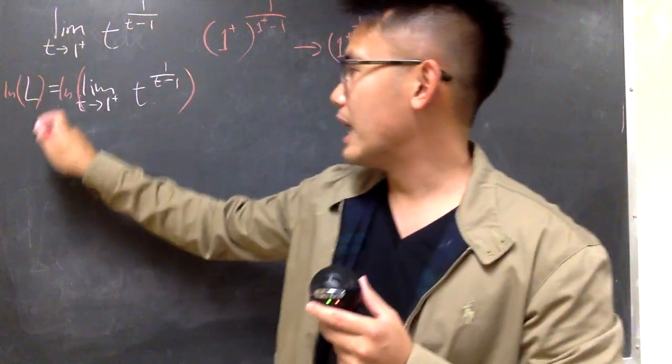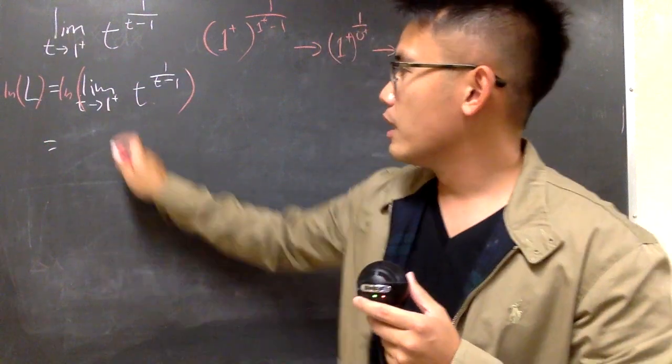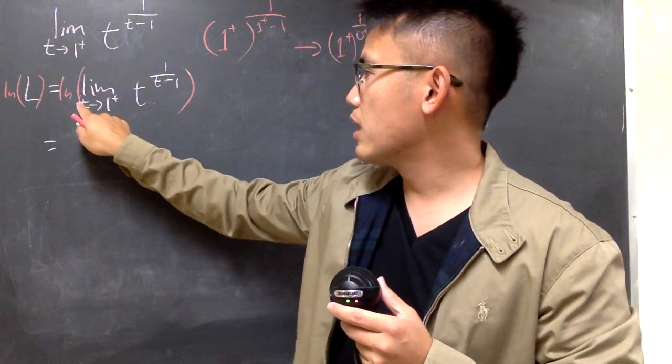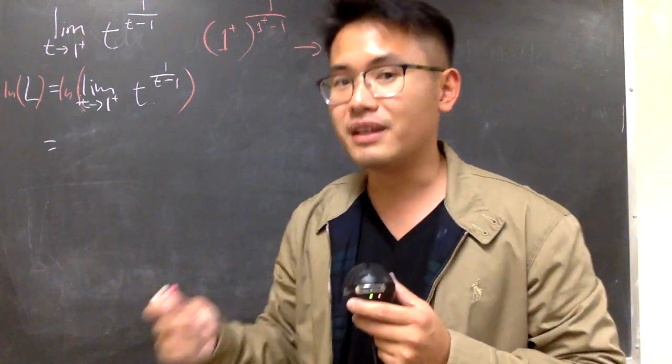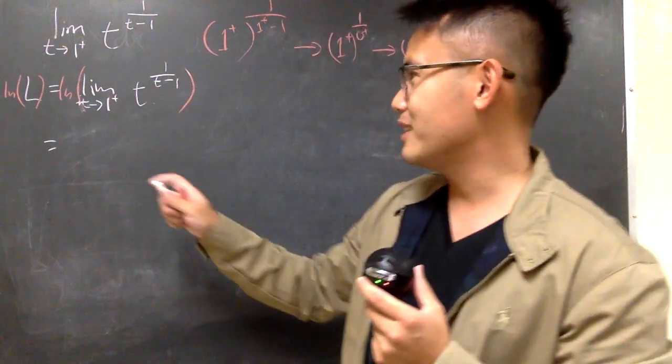And we have natural log of L. This is equal to, when you take the natural log of a limit, it's the same as the limit of the natural log, because natural log is a continuous function. That's the technical part.